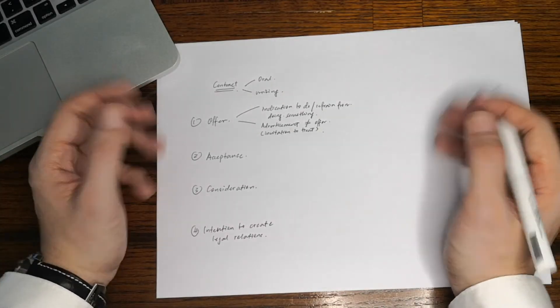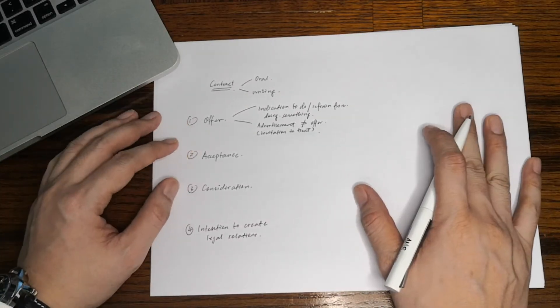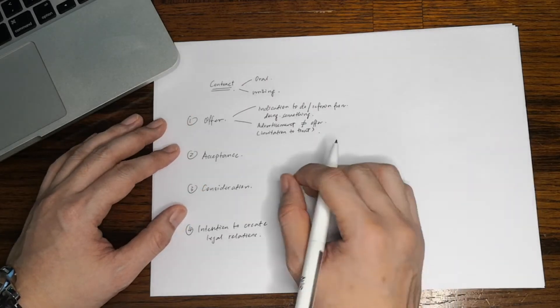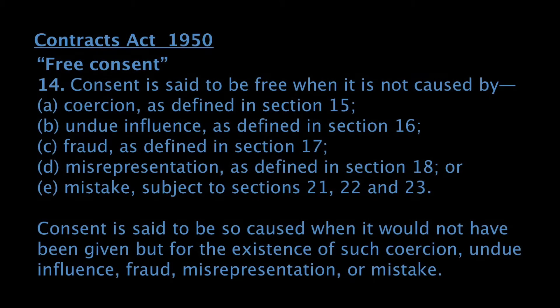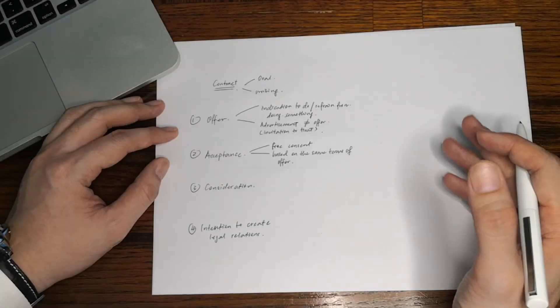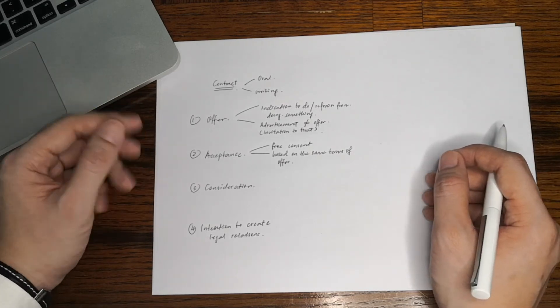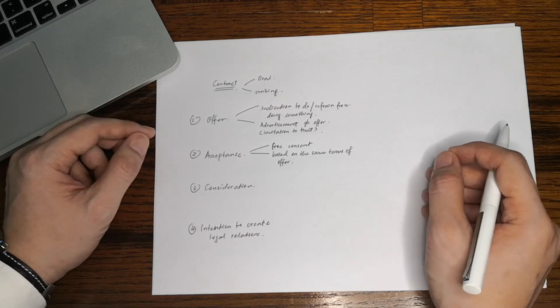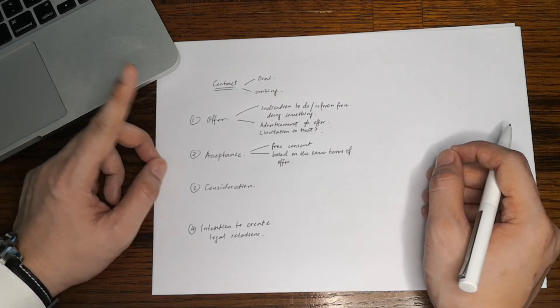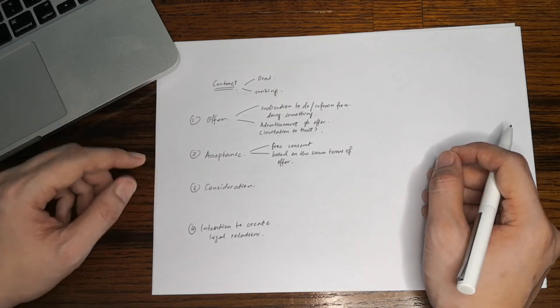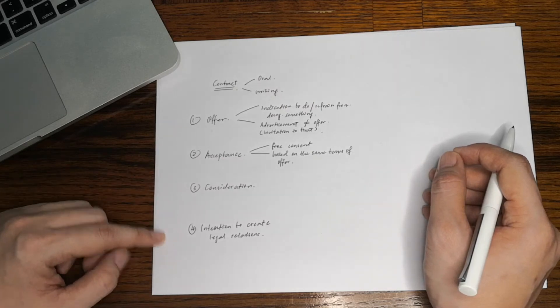The offer and acceptance must be made by free consent of the parties. In other words, it must not be caused by coercion, undue influence, fraud, misrepresentation, or mistake. Once there's an offer and acceptance, technically there's already an agreement intended by the parties. However, it is still not a binding contract until and unless the third and fourth ingredients exist.